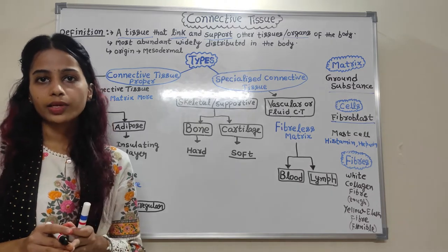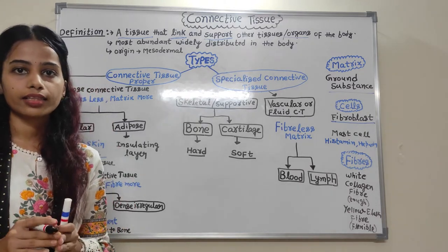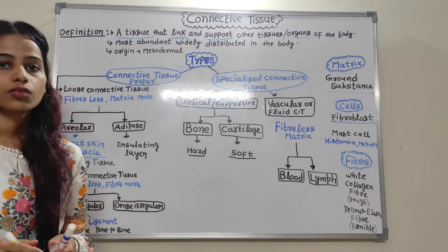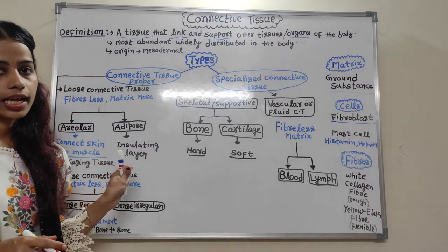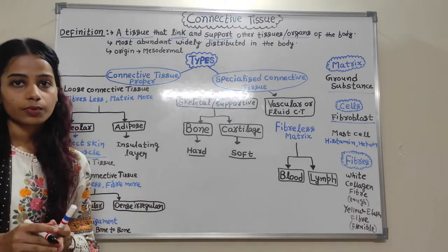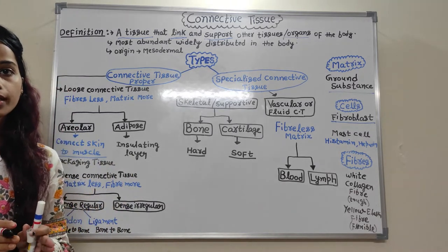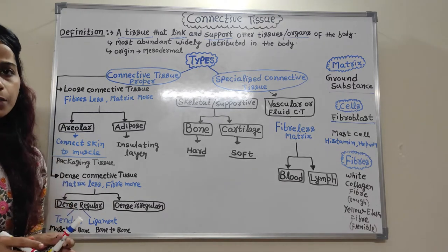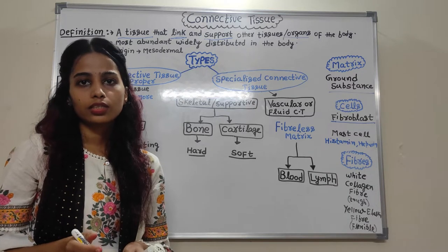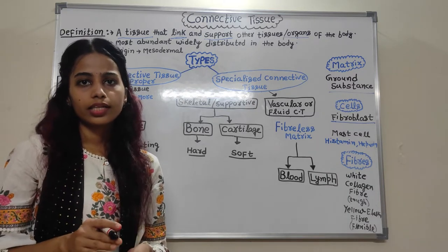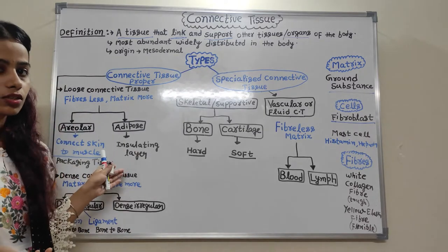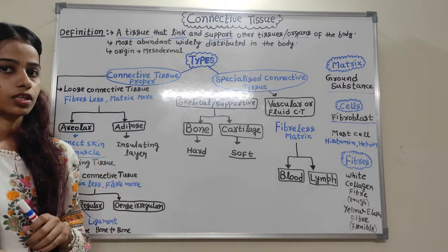A common example of Connective Tissue is blood — we can see that blood is present everywhere, so it is the most abundant and widely distributed tissue in our body. Regarding the origin of Connective Tissue, it is of mesodermal origin. Unlike epithelial tissue, which originates from all three layers — ectoderm, mesoderm, and endoderm — Connective Tissue originates from the mesoderm only.